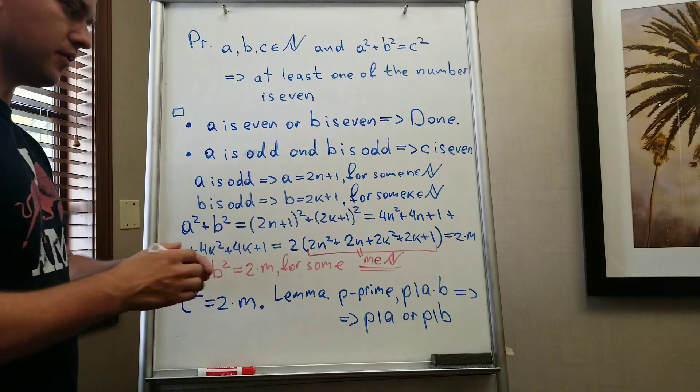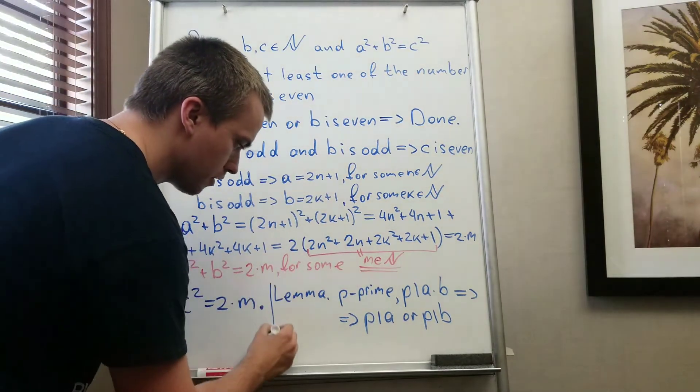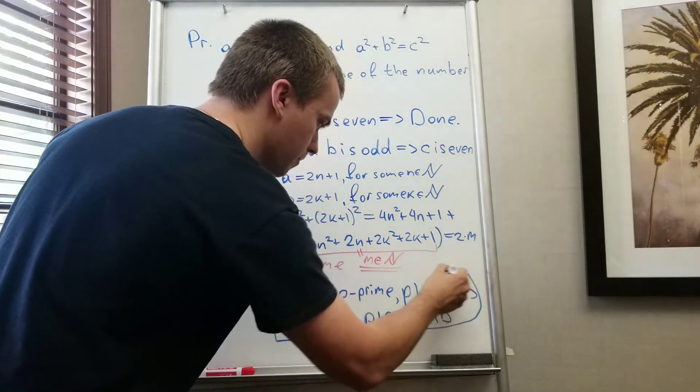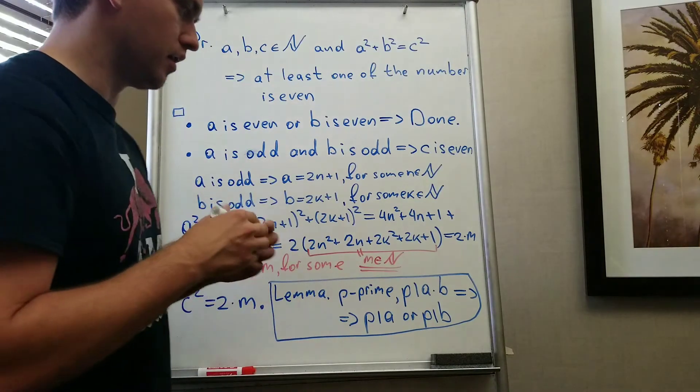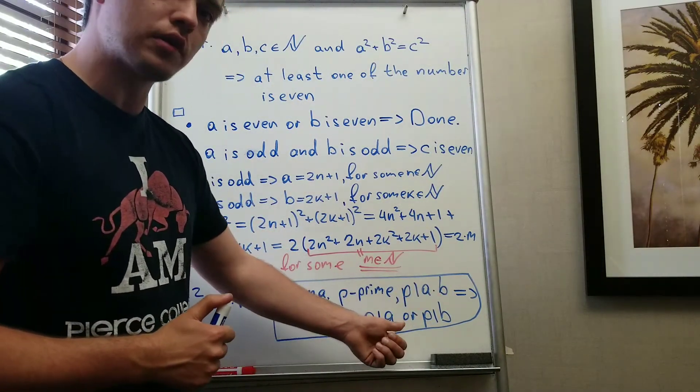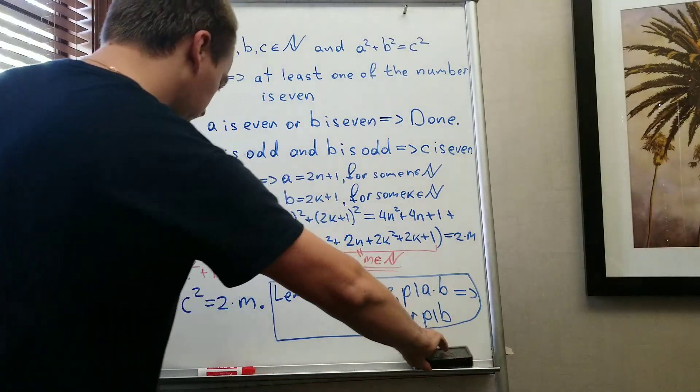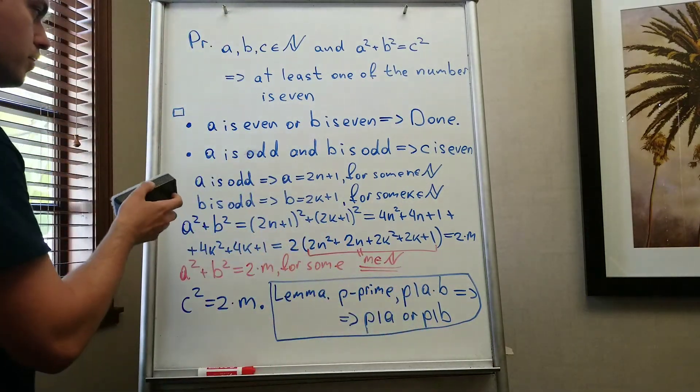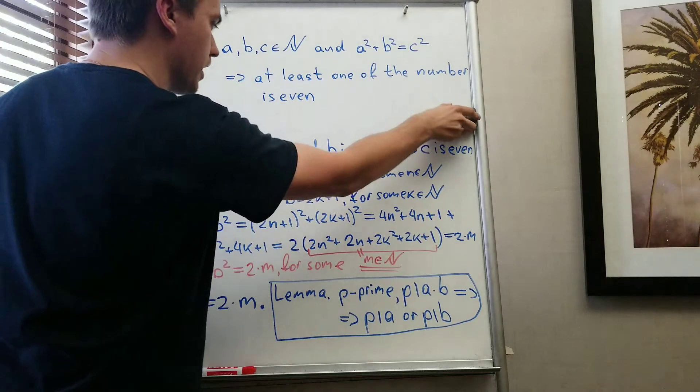then from here follows that p either divides a or p divides b. So it means if you have a prime number that divides two numbers, then the prime number must divide the first one or the second one. And how I'm going to use this one?